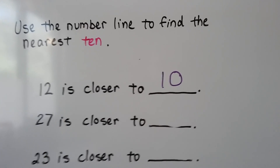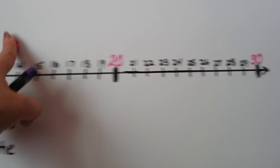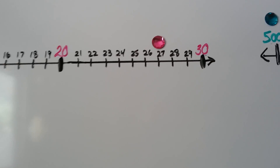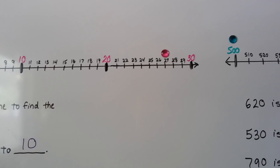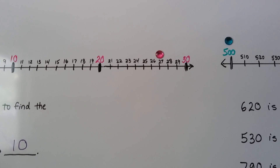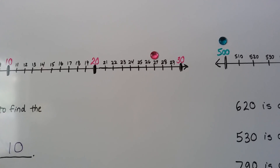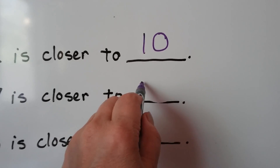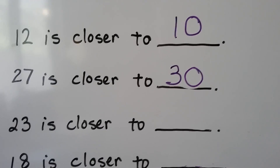Now let's do 27. We find the 27 on the number line and put our jewel there. We see it's in between 20 and 30, but which one is it closer to — the 20 or the 30? It's definitely closer to the 30. So 27 is going to round to 30 if we round it to the nearest 10.